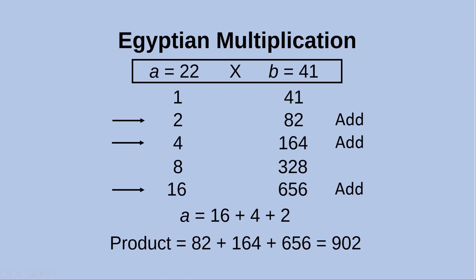After finding those doubled values in each column, I need to figure out which powers of 2 sum up to a, which is 22. I find that 16 plus 4 plus 2 equals 22. So I mark three rows, and then add up the corresponding values in the second column: 82 plus 164 plus 656. Altogether that gives 902 as the answer to 22 times 41.